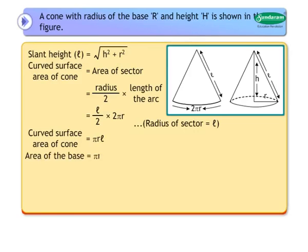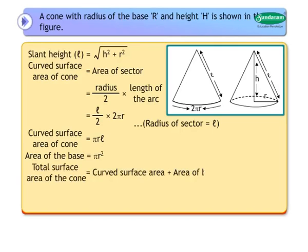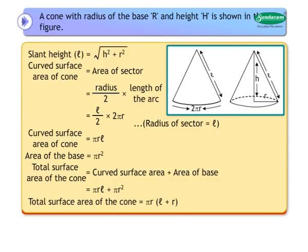Area of the base equals area of the circle equals πR squared. Total surface area of the cone equals curved surface area plus area of the base, which equals πRL plus πR squared. Therefore, total surface area of the cone equals πR(L + R).